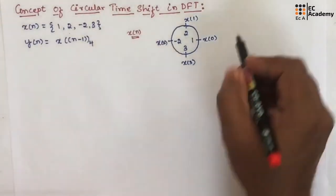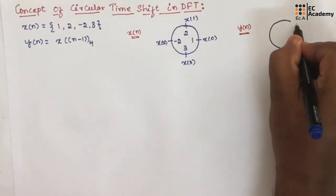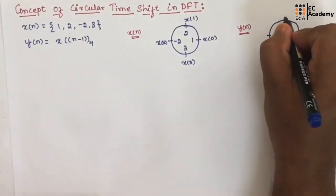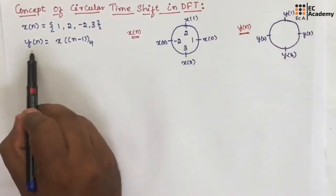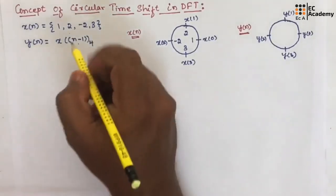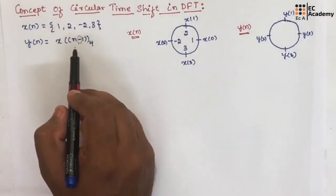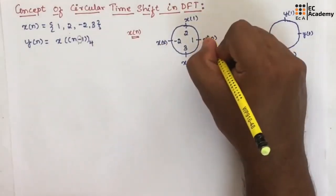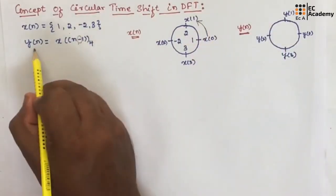Now let us represent y of n using a unit circle. Take a circle and divide it into 4 parts, then write y of 0, y of 1, y of 2, y of 3. To find this sequence y of n, since they have given a circular shift by 1 position with a negative sign, we need to rotate x of n in the anti-clockwise direction by 1 step.